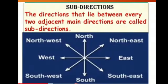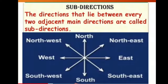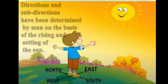Now, let us learn about the subdirections. The directions that lie between every 2 adjacent main directions are called subdirections. Look at the picture — 4 are main directions and 4 are subdirections. Subdirections lie between every 2 adjacent main directions, like North-East, North-West, South-West and South-East. Directions and subdirections have been determined by man on the basis of the rising and setting of the Sun.